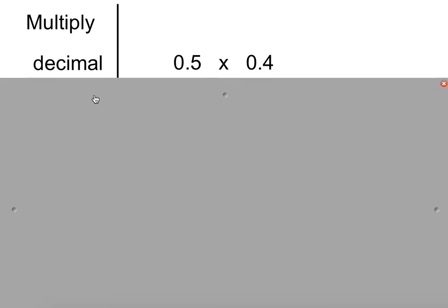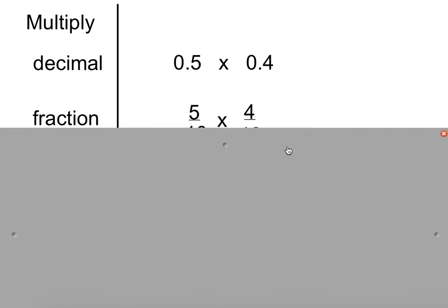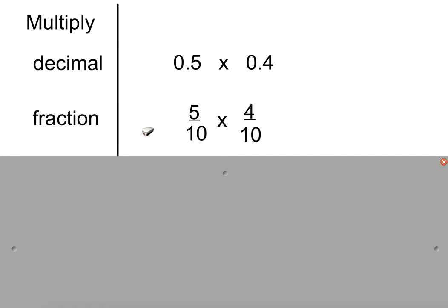So let's draw our line down and let's write multiply. First we're going to look at the decimal, 0.5 times 0.4. Or in other words, if we wrote them as fractions, you would write them how you say it. So as a fraction, we'd have 5 tenths times 4 tenths.